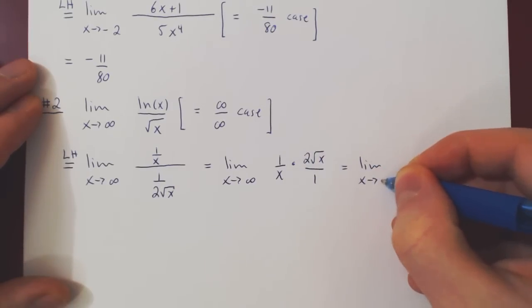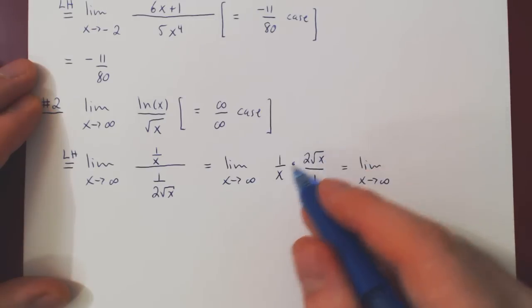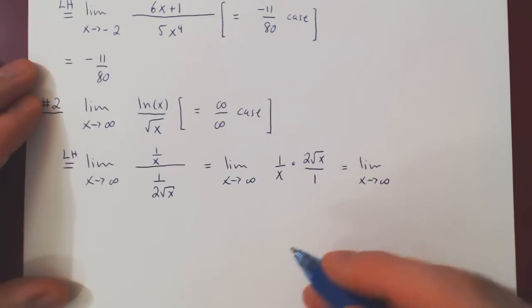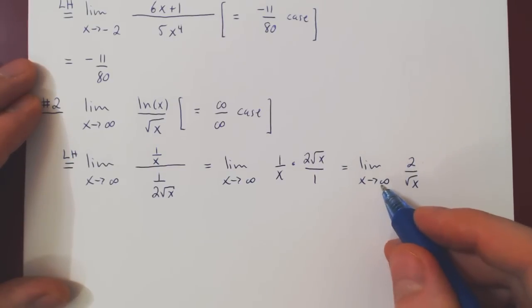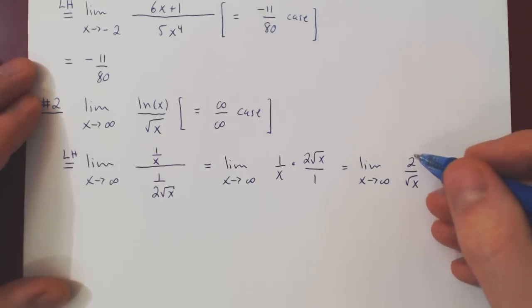We can simplify some more. As root of x over x is 1 over root of x, and we're left with 2 over root of x. And now we have a trivial limit. As x goes to infinity, root of x goes to infinity, and so our case is 2 over infinity.